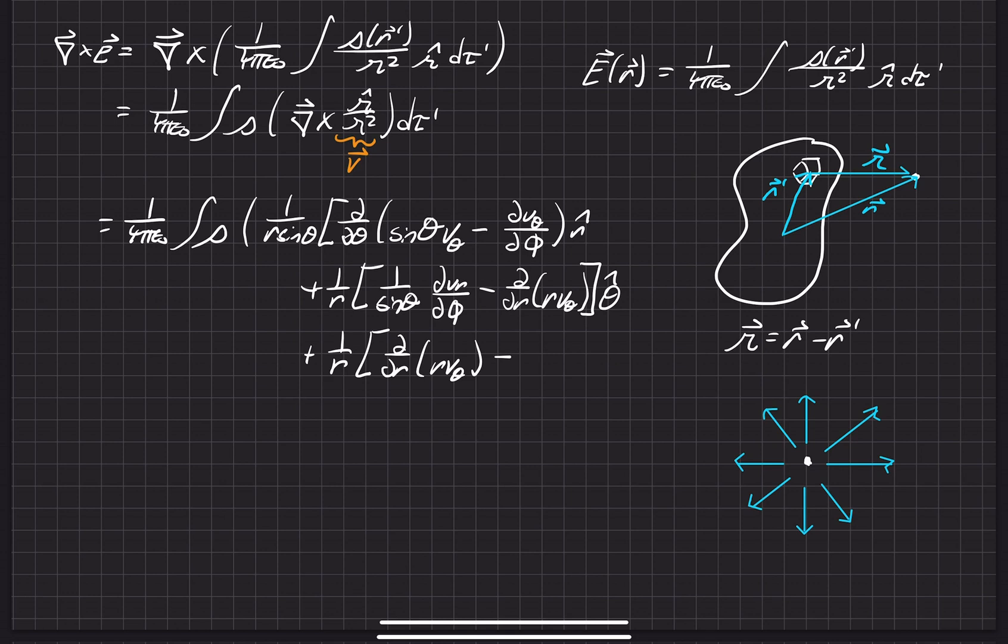And then finally, this is the phi component here. Curl is a long thing to work with. This is the phi component, all in parentheses times our volume charge element here.